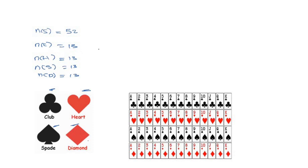The number of red cards: since hearts and diamonds are red, we have 13 hearts plus 13 diamonds, so the number of red cards equals 26. Therefore we have 26 red cards and also 26 black cards. In a complete pack of cards, as you can see here, we have 26 black and 26 red.